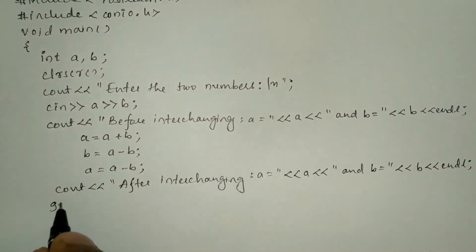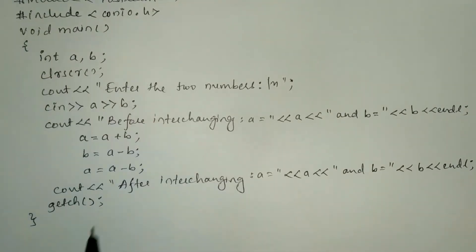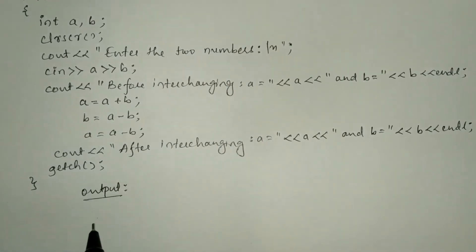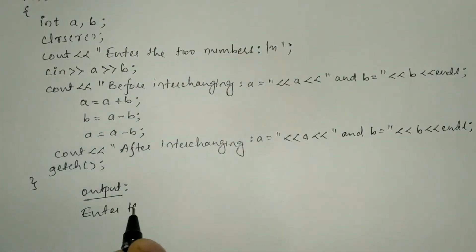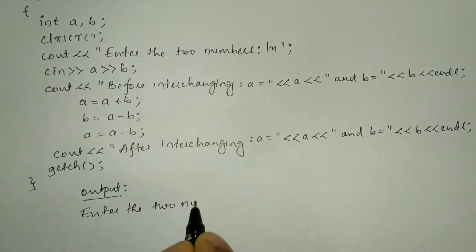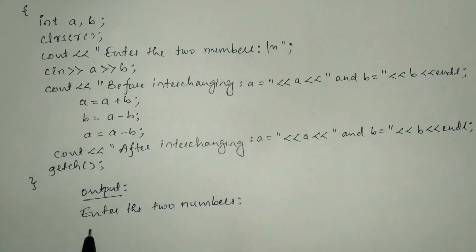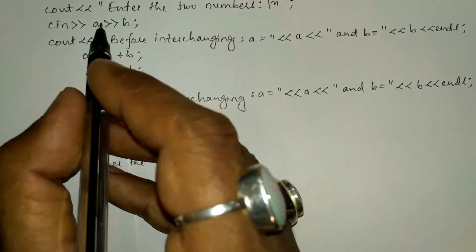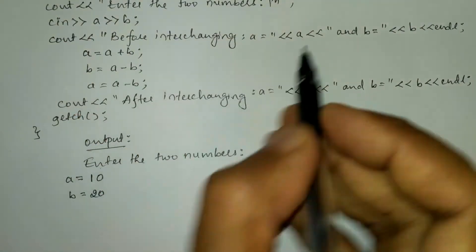I write the getch function and then the curly closing brace for the main function. Now let us trace through an example. Once we compile and run this program it will ask the user to enter two numbers. The backslash n brings the cursor to the next line. For example, I will enter 10 and 20, so 10 will be stored in variable a and 20 in variable b.